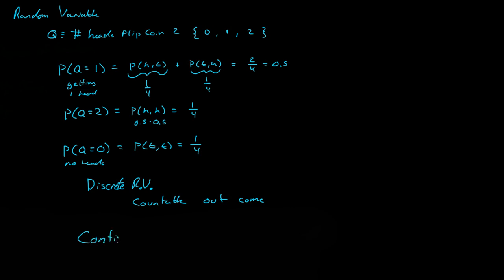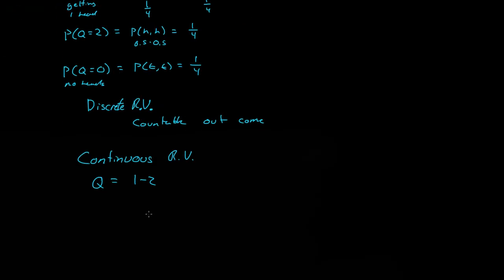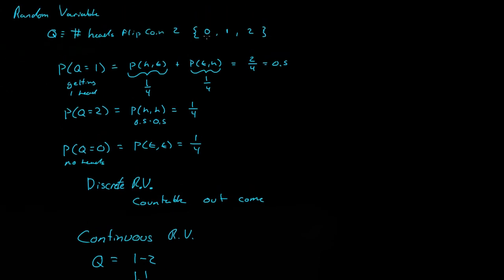There are also continuous random variables, where Q could equal values in a range like one to two, with an infinite number of possibilities — for example, 1.1, 1.11, 1.111, and so on. A continuous random variable could represent something like the thickness of a piece of rubber. A discrete random variable, by contrast, takes integer values like 0, 1, 2, 3, 4, 5.